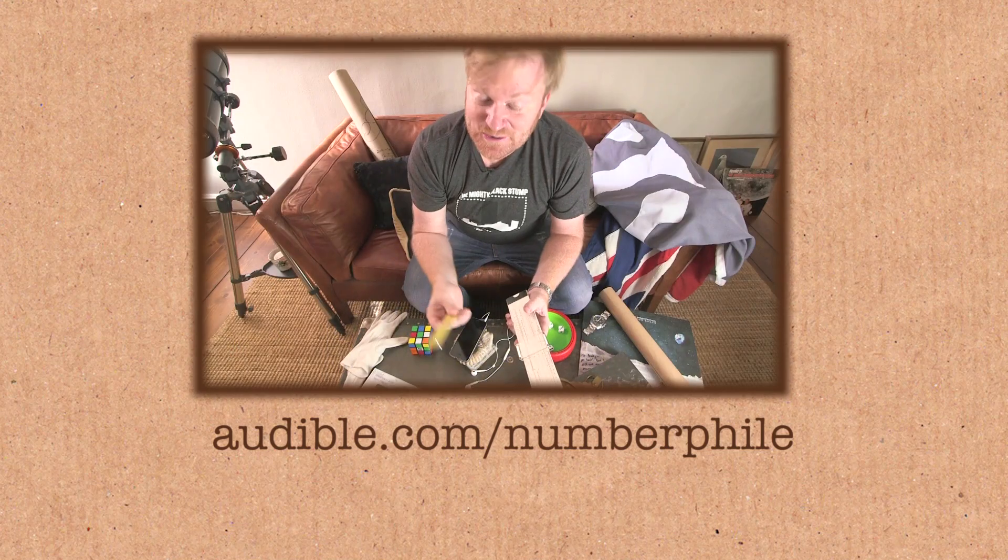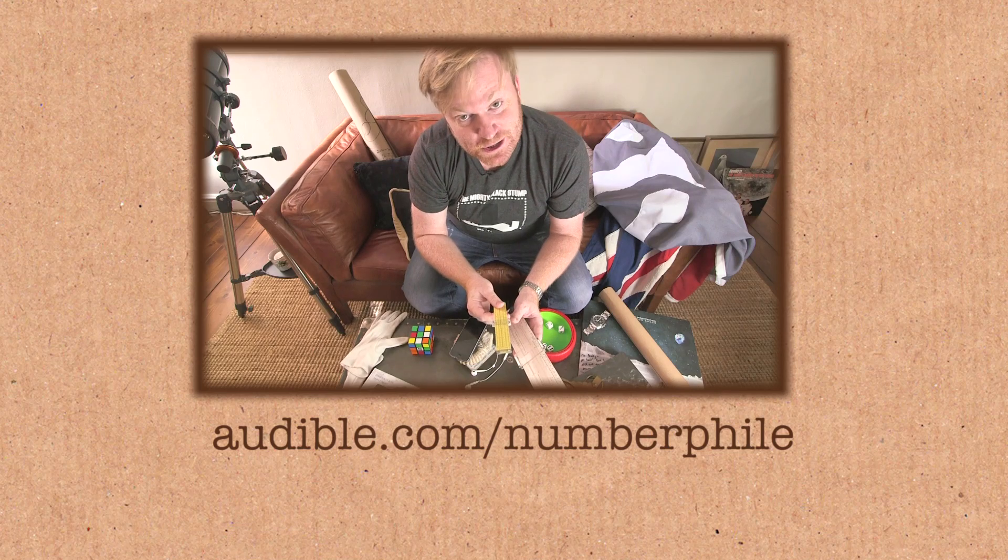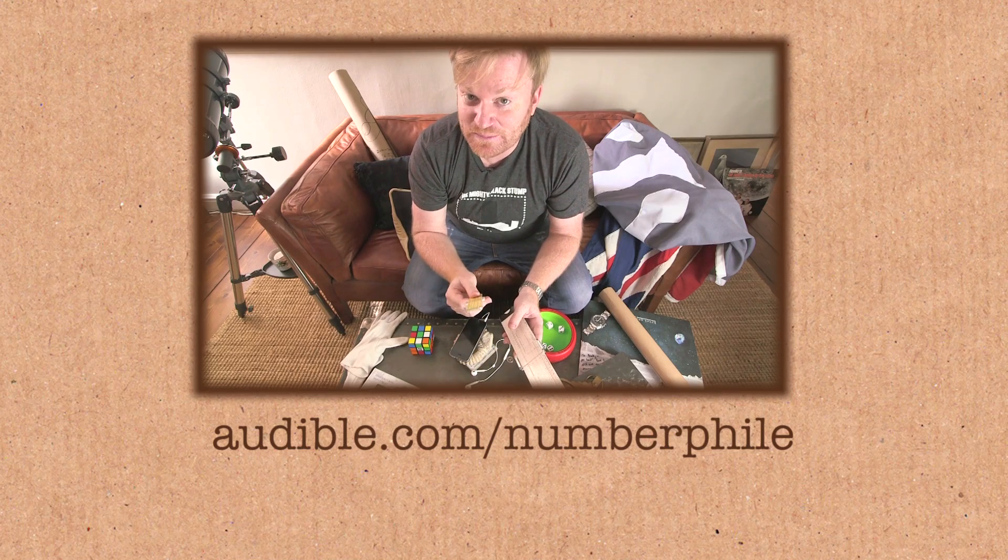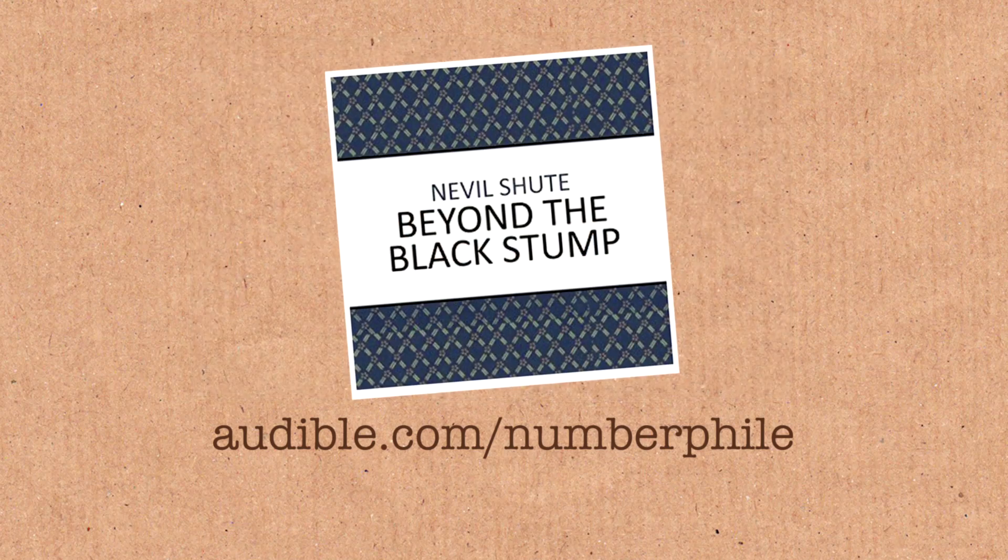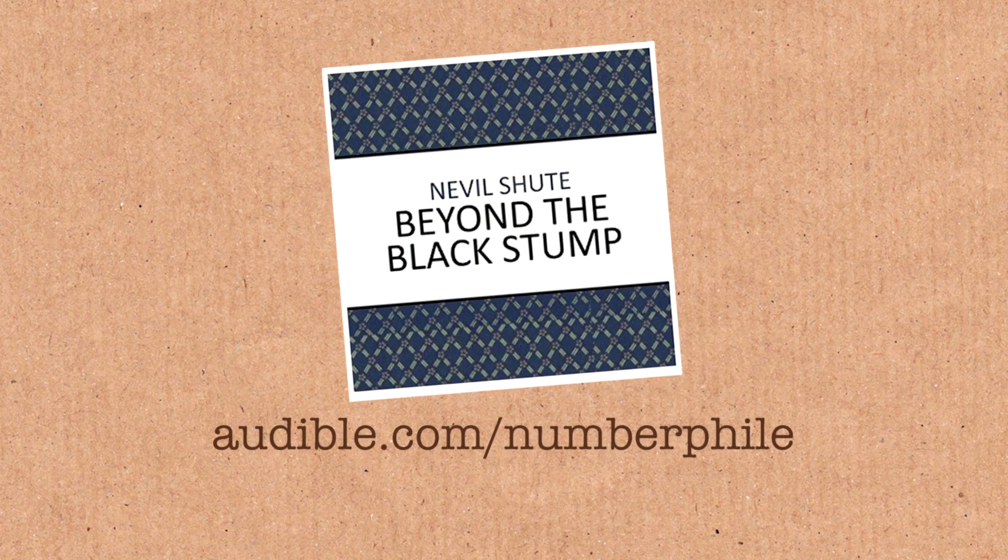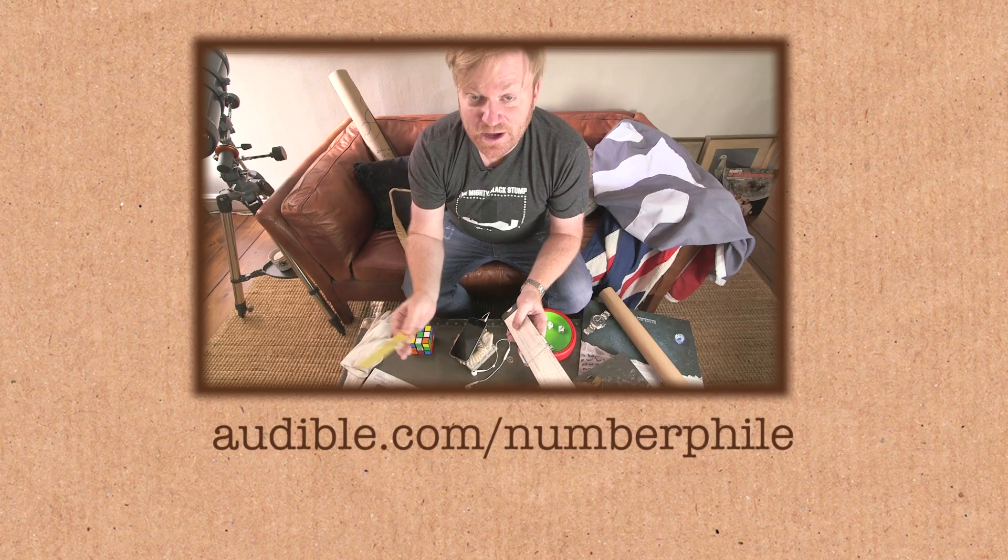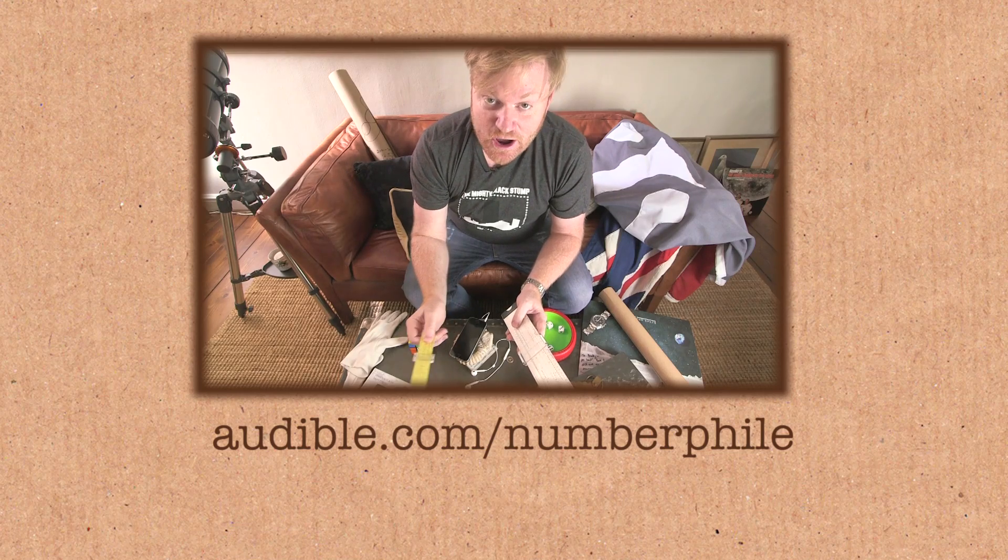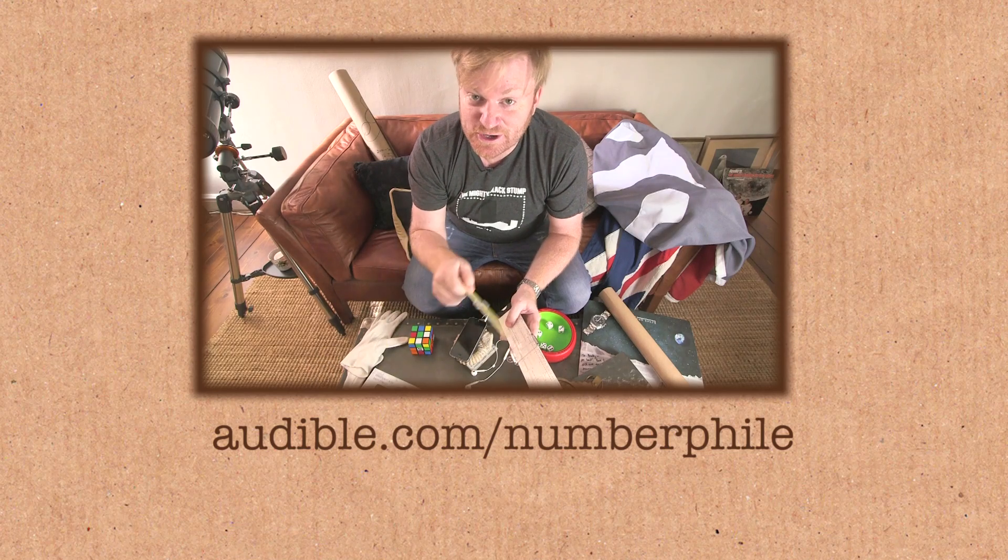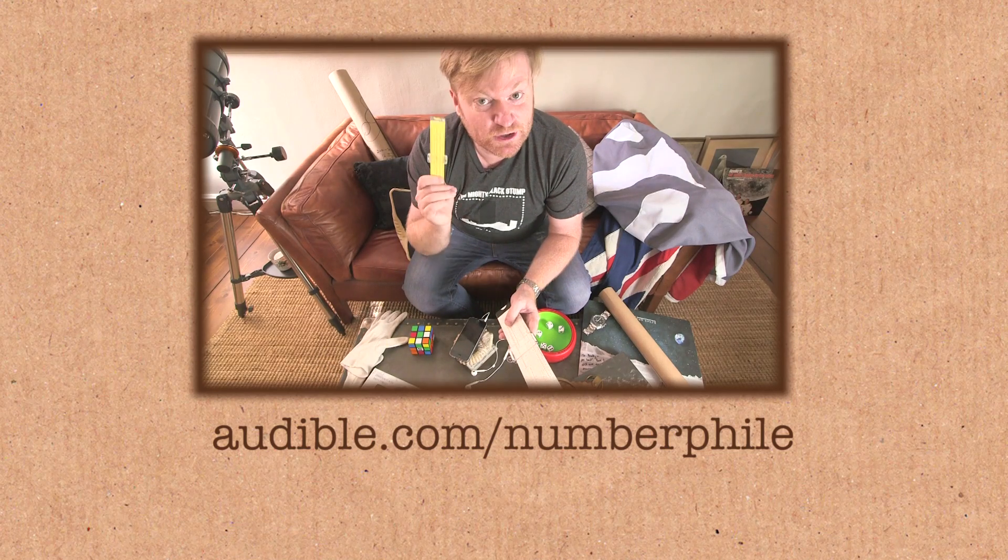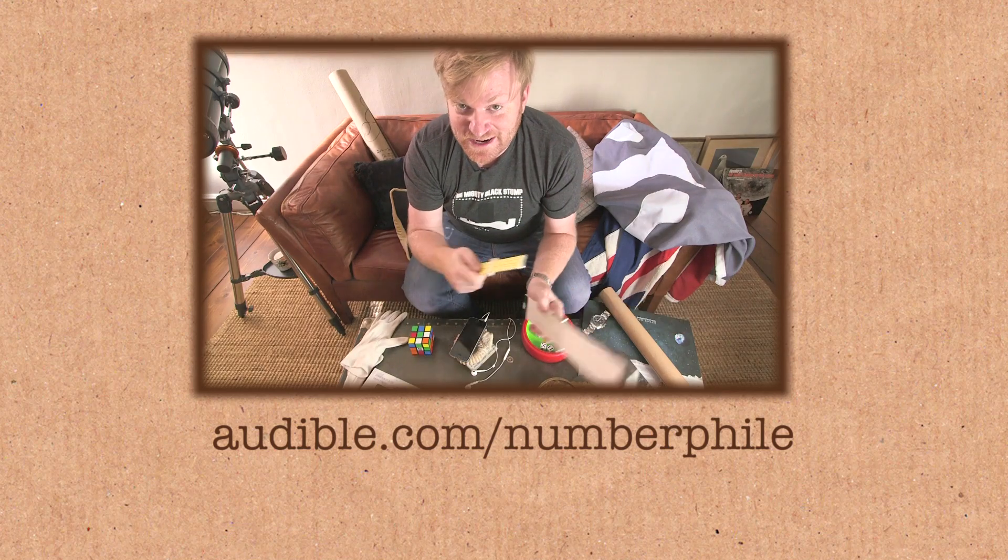Listeners to the podcast Hello Internet, which I co-host with CGP Grey, may also be interested to know Shute has a book called Beyond the Black Stump, and yes, that's also available on Audible. So Audible is offering a free audio book with their 30-day trial. Go to audible.com slash numberphile, and you can sign on for that 30-day trial. You can get your free book, and if you use the URL slash numberphile at the end, they'll know you came here from the podcast. And when you get your free book, why not go for Slide Rule by Neville Shute.